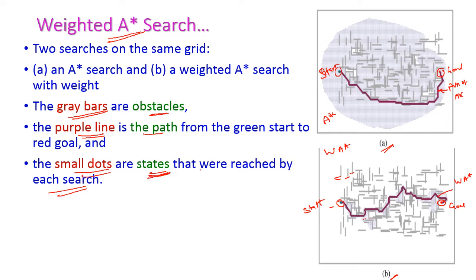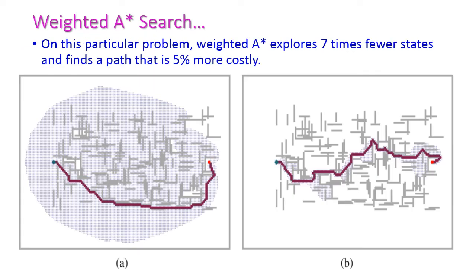When it comes to A* search, so many small dots are there. If we implement A* search, we need to explore all these states to find the goal — it explores almost all the states within the boundary. The purple line is the path of the A* algorithm from the starting state, shown by the green dot, to the goal state, shown by the red dot.